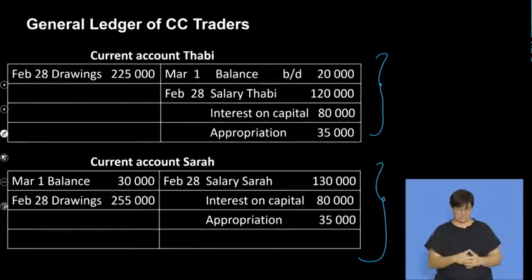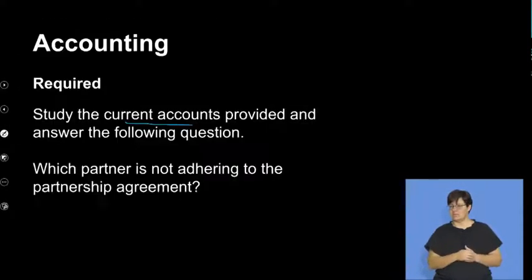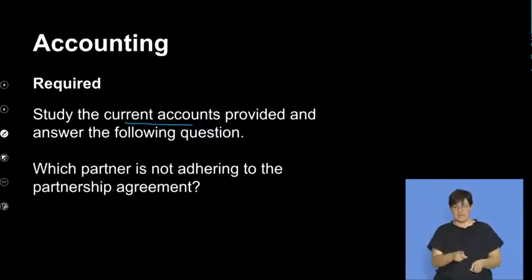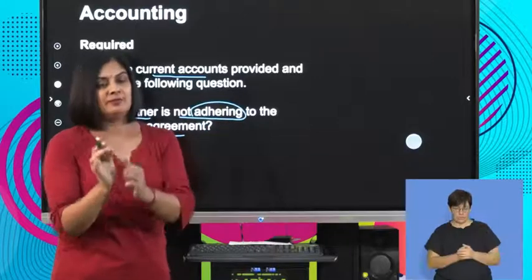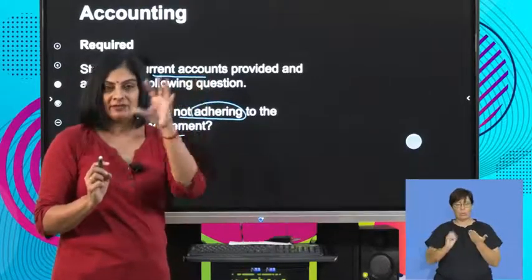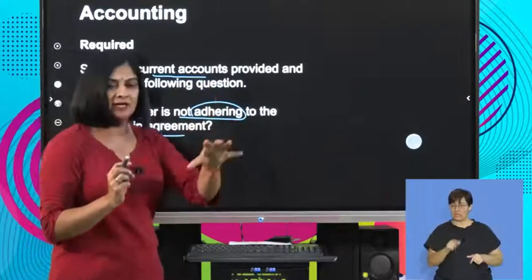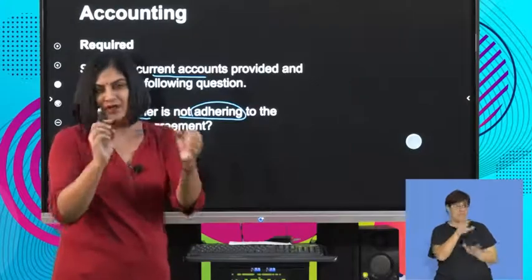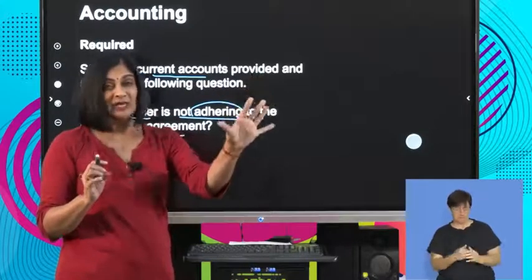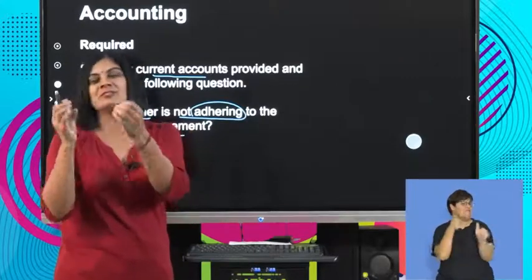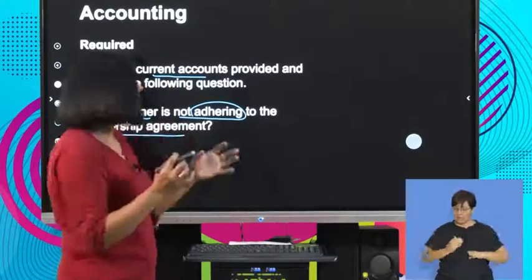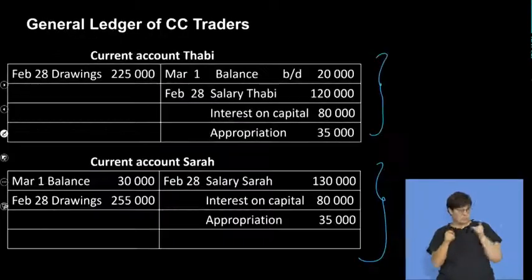What are we expected to do? The question asks: which partner is not adhering to the partnership agreement? We are not given the partnership agreement, but we are given the current account. 'Not adhering' simply means not following — breaking that partnership agreement. So someone is being a bit naughty and not following the terms and conditions agreed upon.